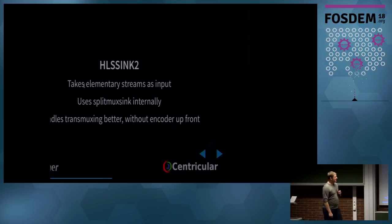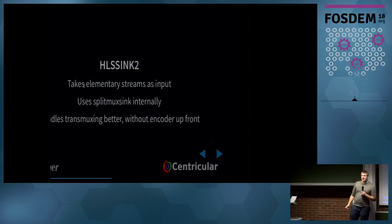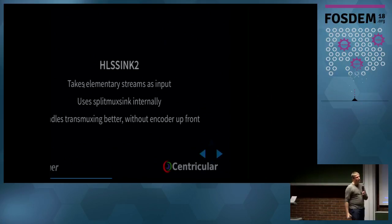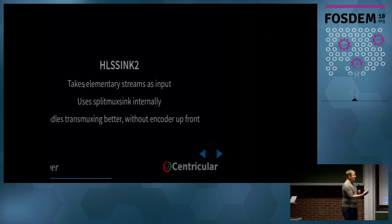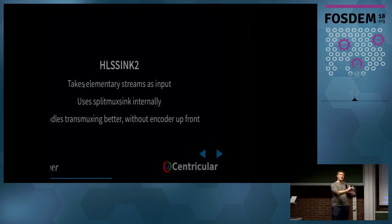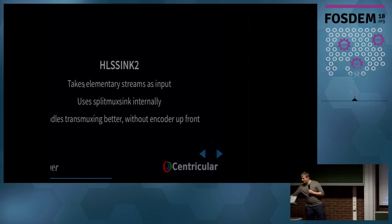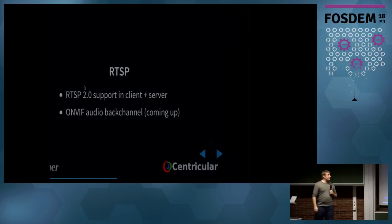HLSSink2 — we had HLSSink where you feed it an MPEG-TS stream, which is not always convenient. HLSSink2 basically lets you feed it elementary streams — give it an encoded video stream and an encoded audio stream, and it will do the splitting and muxing for you using splitmuxsink internally. It works much nicer with content that is already encoded. HLSSink relies on an encoder up front to force keyframes at boundaries, whereas HLSSink2 will work without that.